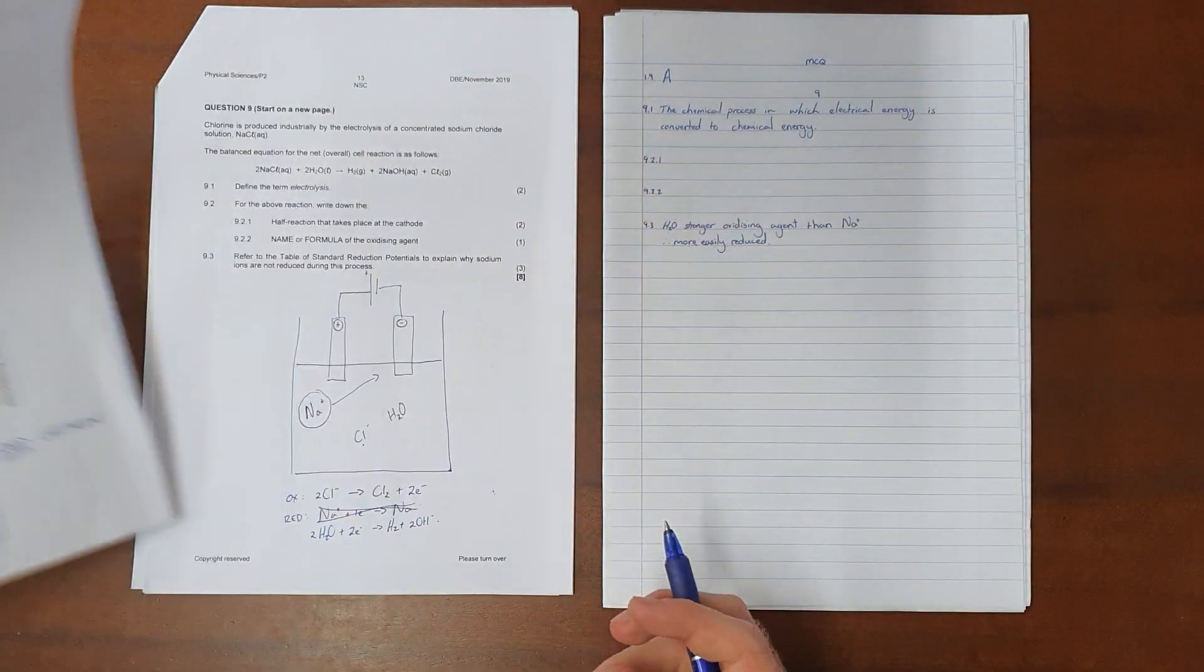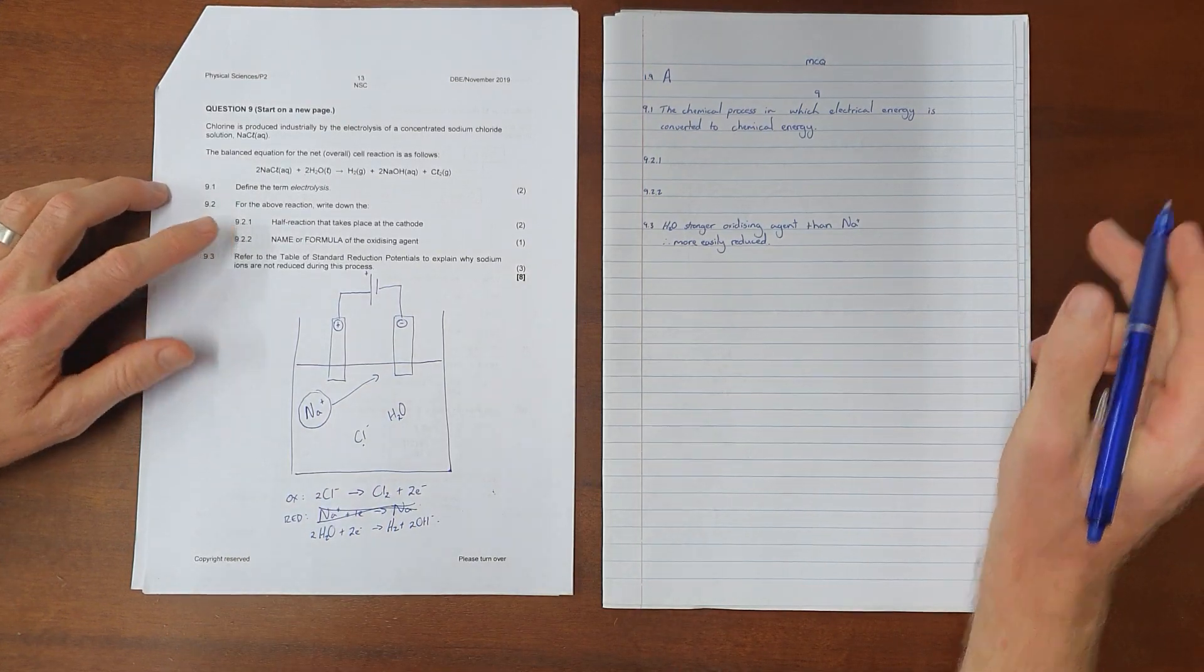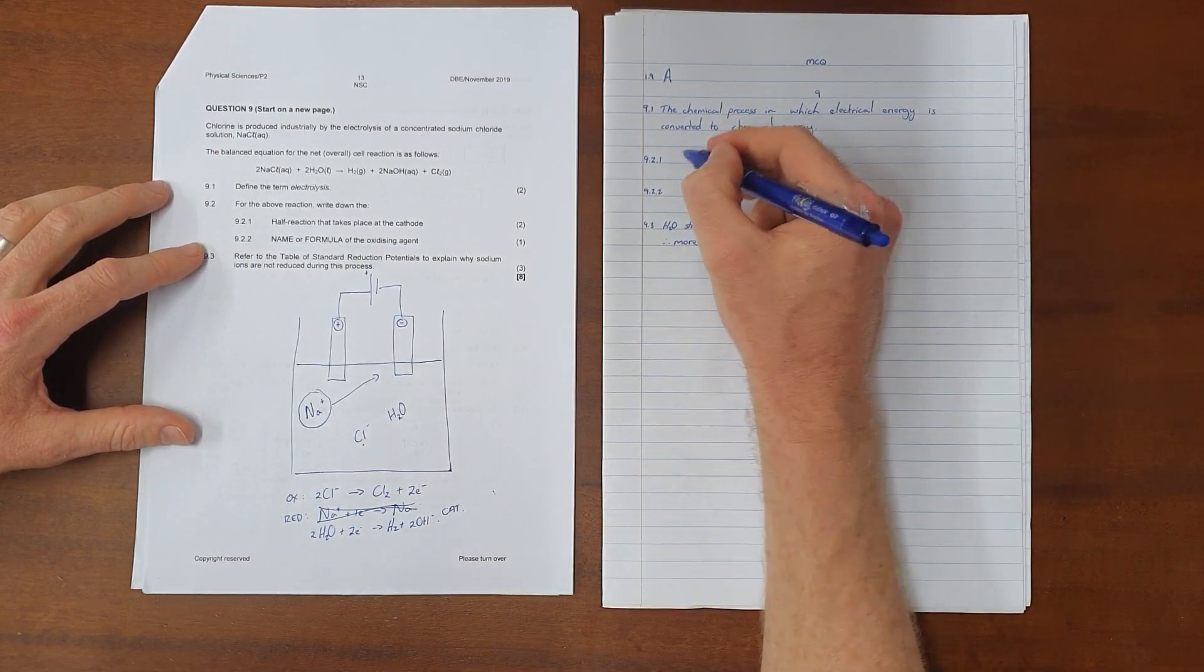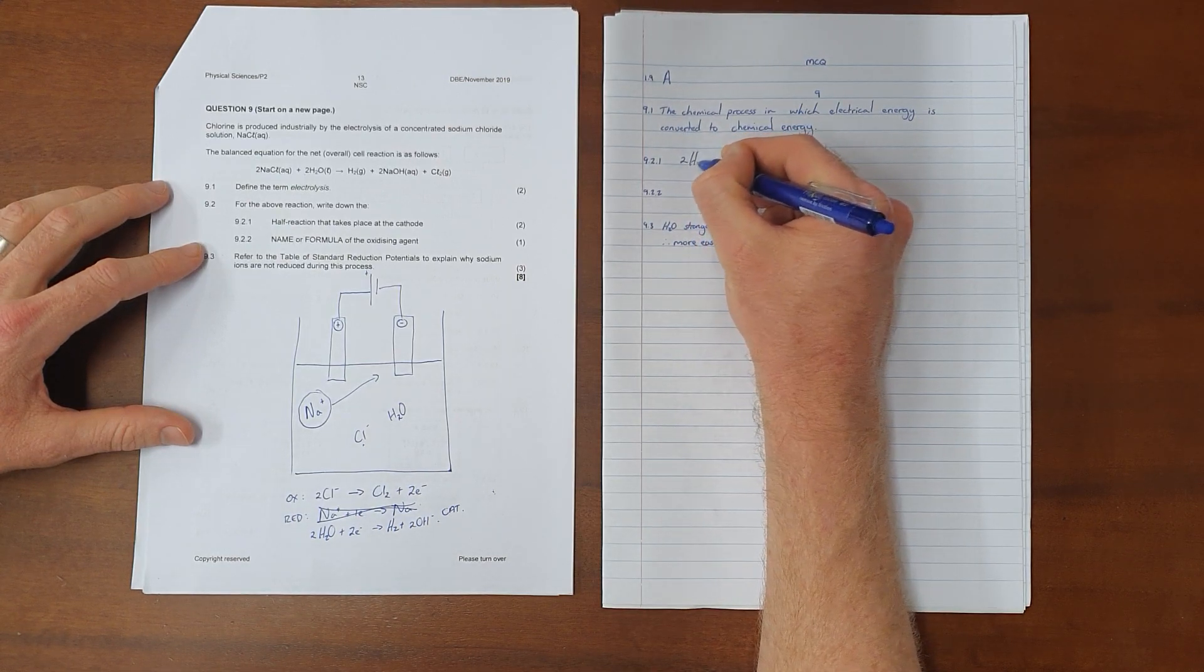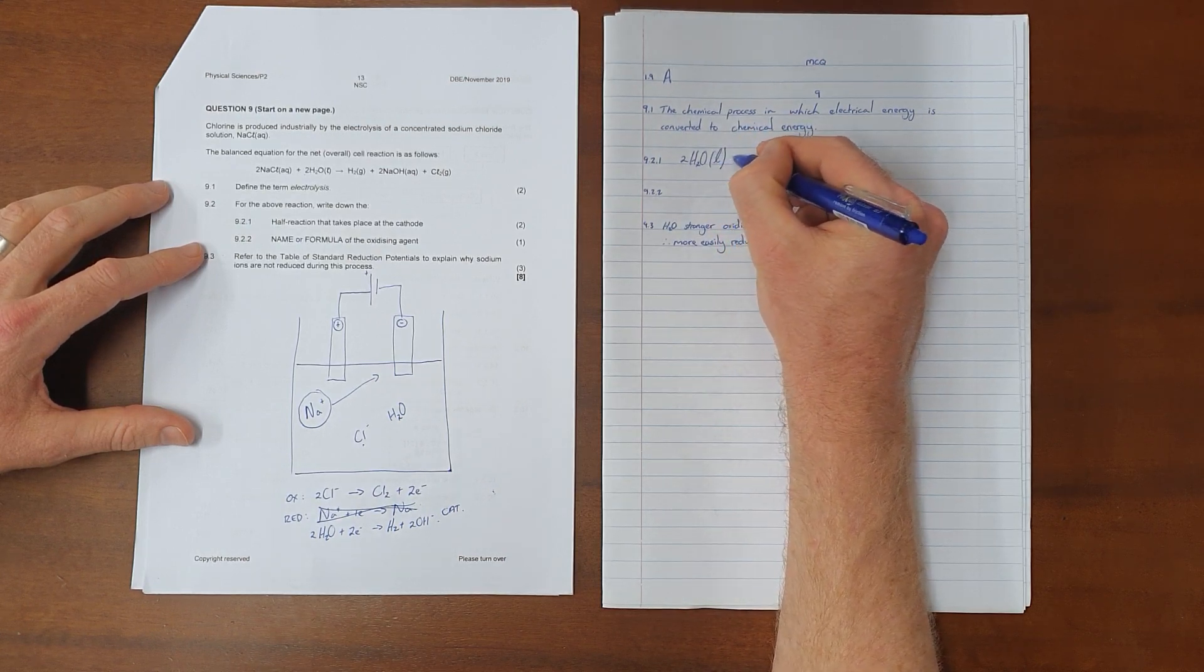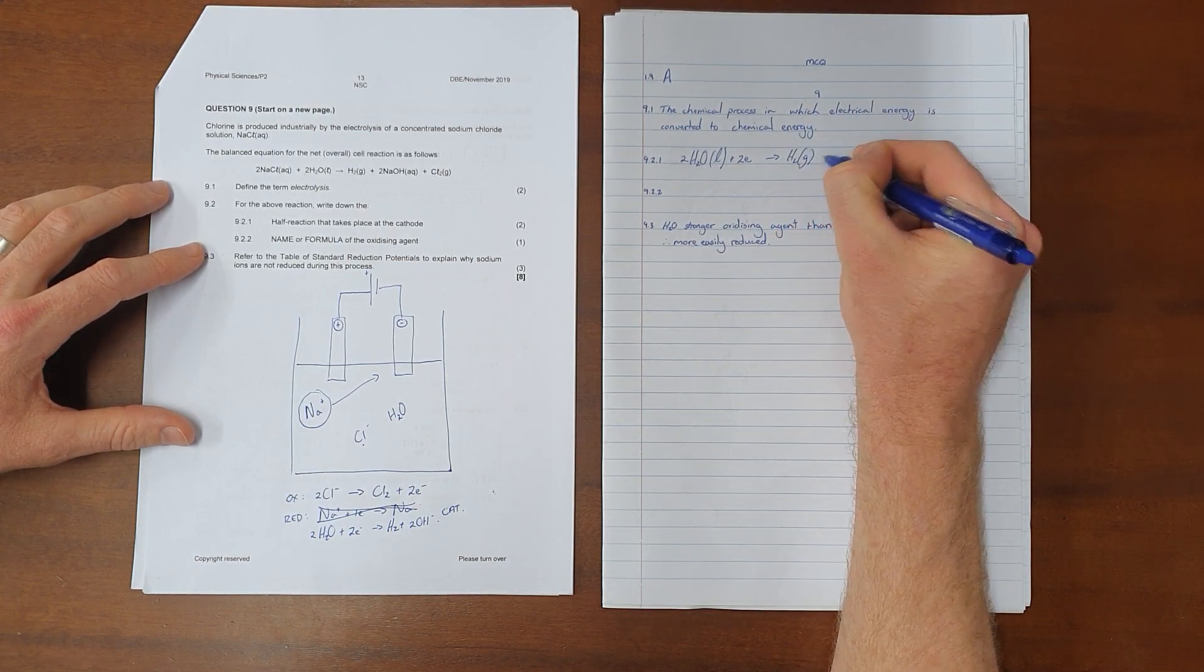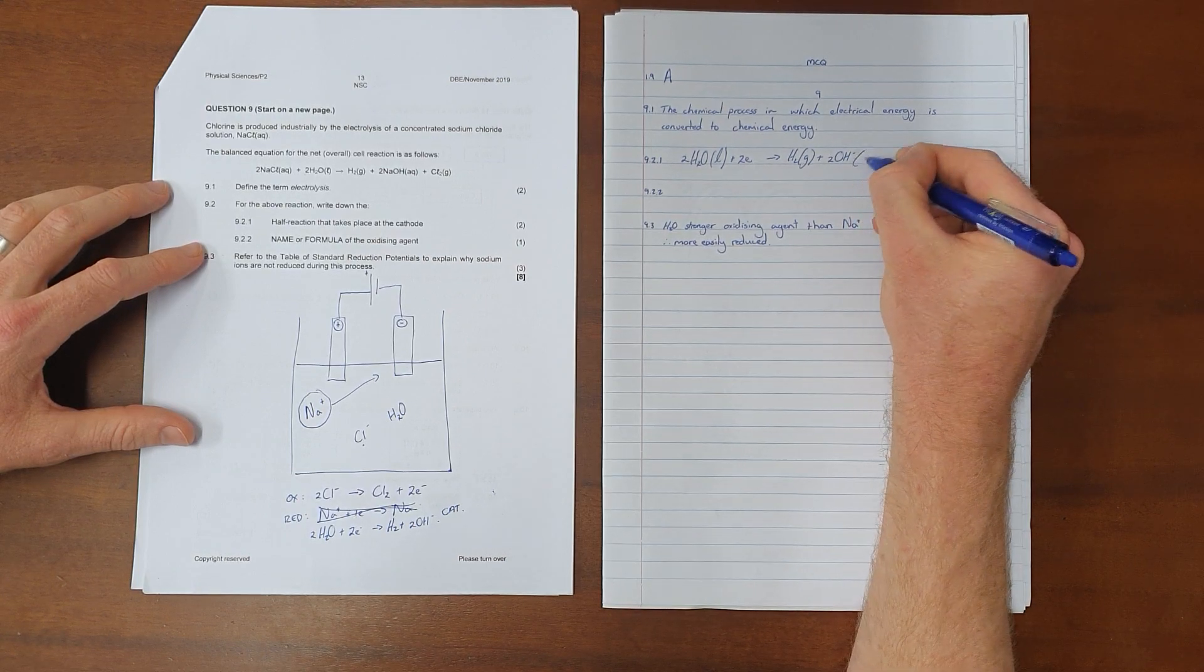Now we can get back to the question, which says write down the half reaction that takes place at the cathode, and we know that reduction always occurs at the cathode, which means that the half reaction that takes place here is the reduction of water. That is 2H2O in liquid form that gains 2 electrons in order to form hydrogen gas and 2 hydroxide ions in aqueous solution.